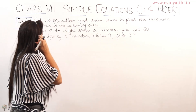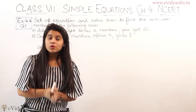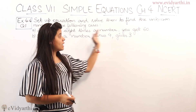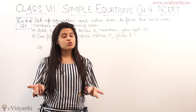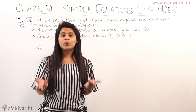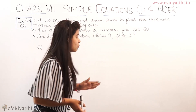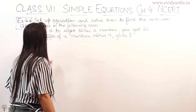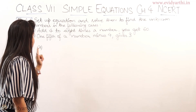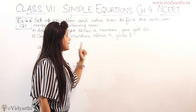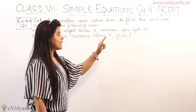It's very important that whatever situation you have, you have to understand it. Because if you have made the equation wrong, then even if you solve it correctly, the answer will be wrong. So the equation is very important. In this part, we have to add 4 to 8 times a number, and you get 60.